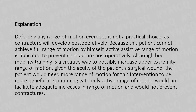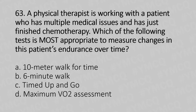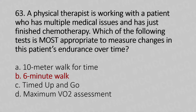Now let's move to our 63rd question. A physical therapist is working with a patient who has multiple medical issues and has just finished chemotherapy. Which of the following tests is most appropriate to measure the change in the patient's endurance over time? Option A: 10-meter walk for time. Option B: 6-minute walk. Option C: Timed Up and Go. Option D: Maximum VO2 assessment. The answer is Option B — 6-minute walk.